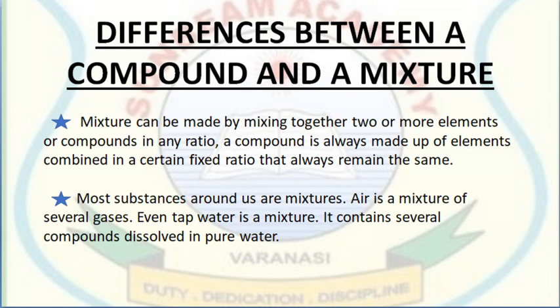Most of the substances around us are mixtures — like air is also a mixture, and the air is a mixture of several gases. Tap water is also a mixture and contains several compounds dissolved in pure water. While a mixture can be made by mixing two or more elements or compounds in any ratio, a compound is always made by combining two or more elements in a fixed ratio that always remains the same.